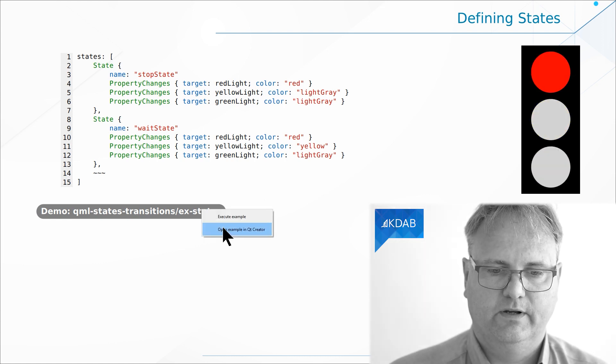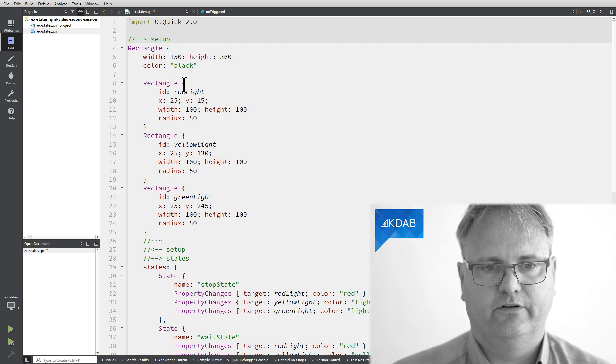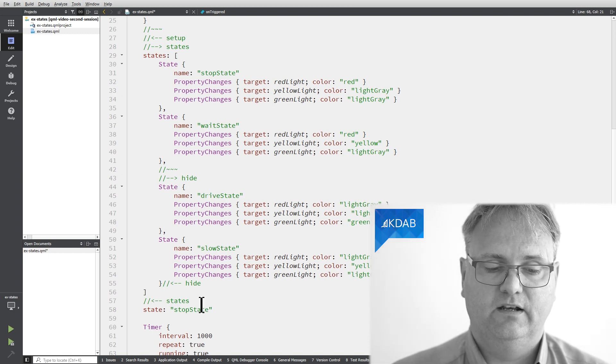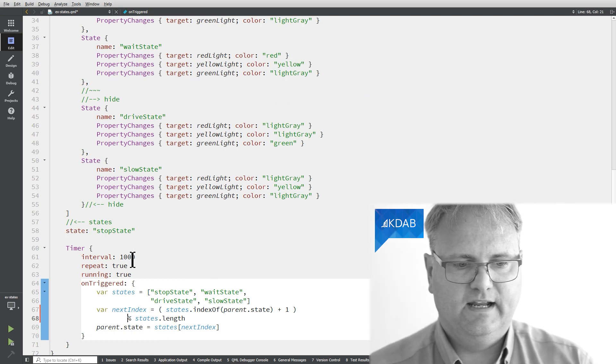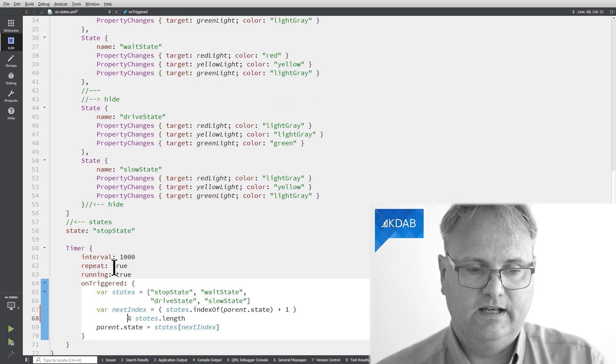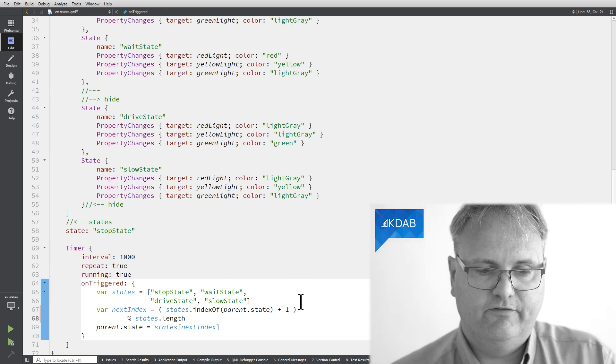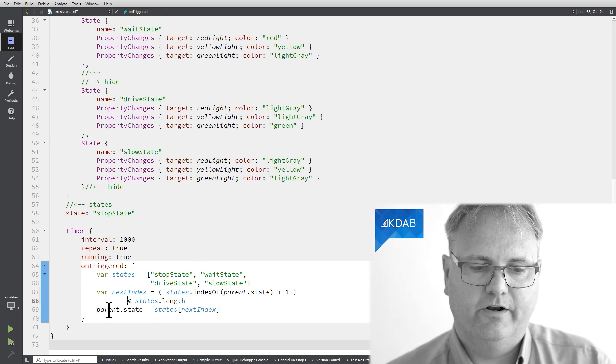Let's see the code in action. Again, my rectangles that I set up here, my outer rectangle that is black. Here are my four states now. I got a state property down here that tells me what is my current state. And I got a timer that tells me that it should run for a thousand seconds infinitely because repeat colon true. It should start running right away. And every time it goes off, it should figure out what is the next index here. It's just a bit of JavaScript magic to figure out what is going to be my next state. And I'm going to update parent.state to that state.